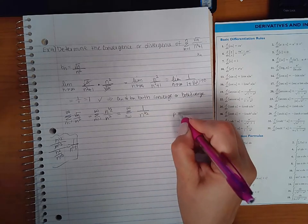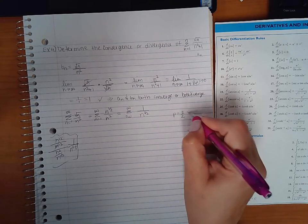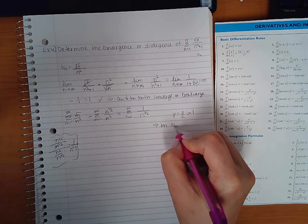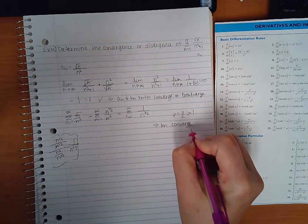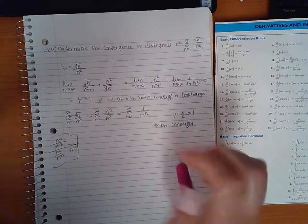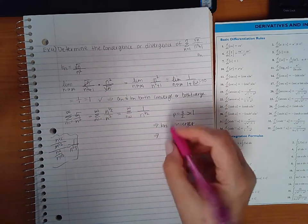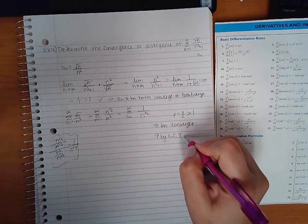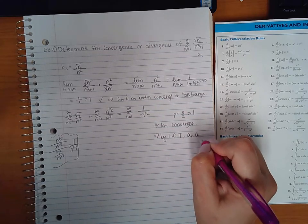Now here, p equals 3 over 2, which is greater than 1, which means that b_n converges. And according to the limit comparison test, that means by the limit comparison test, a_n also converges.